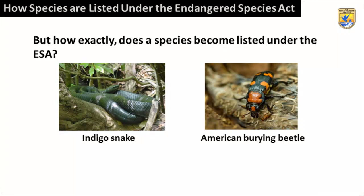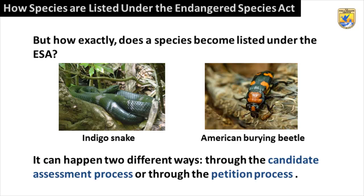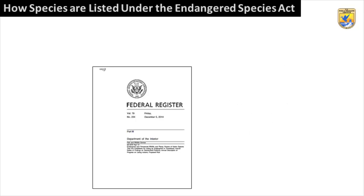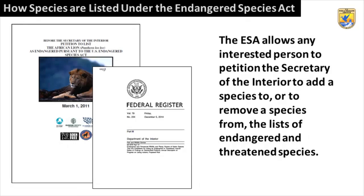But how exactly does a species become listed under the ESA? It can happen two different ways: through the candidate assessment process or through the petition process. In the candidate assessment process, service biologists identify those species they consider to be candidates for listing and protection under the ESA. The ESA also allows any interested person to petition the Secretary of the Interior to add a species to or to remove a species from the list of endangered and threatened species.